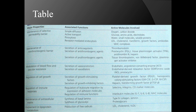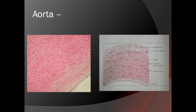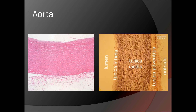Functions of large elastic arteries include maintenance of selective permeability barrier, maintenance of a non-thrombogenic barrier, modulation of blood flow and vascular resistance, regulation of immune response, hormonal synthesis, other metabolic activities, and modification of lipoproteins. Special stains of the aorta show elastic fibers appearing orange, with intima, media, and adventitia distinguishable.